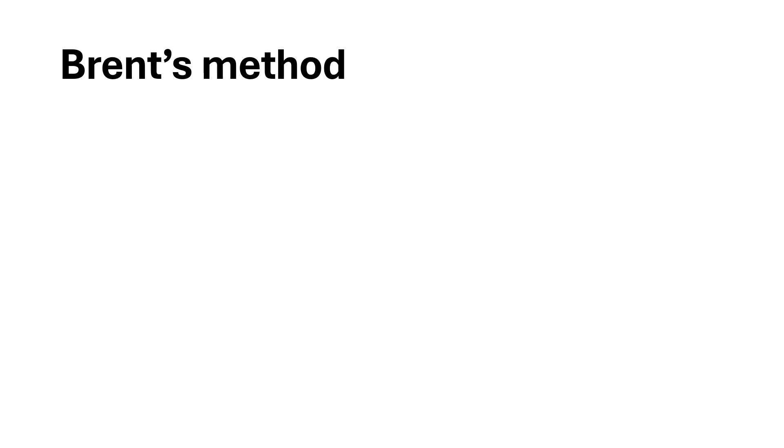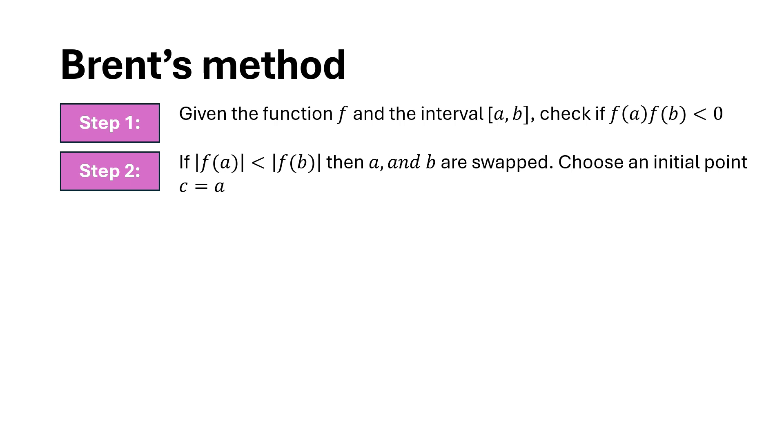In Brent's method, we are given a function f and the interval [a, b] and we check if f(a) and f(b) have opposite signs such that a root lies in the interval. For better convergence, we swap a and b if the magnitude of f(a) is smaller than f(b). Then we choose an initial point c = a.